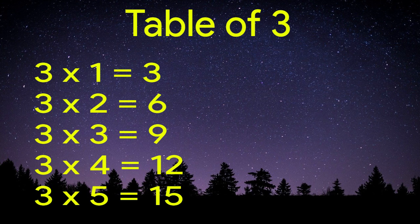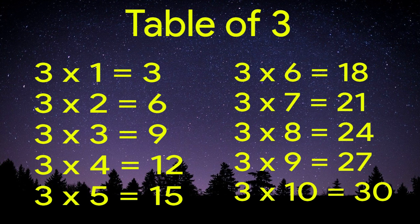Table of 3. 3 times 5 equals 15. 3 times 6 equals 18. 3 times 7 equals 21. 3 times 8 equals 24. 3 times 9 equals 27. 3 times 10 equals 30.